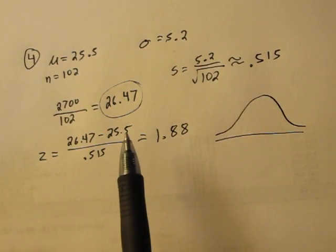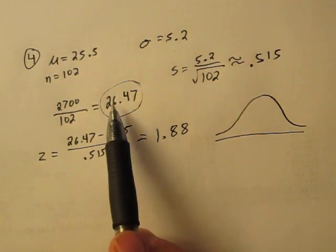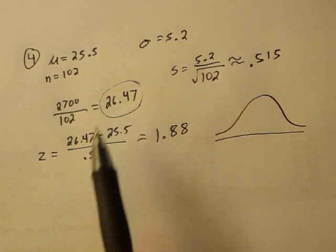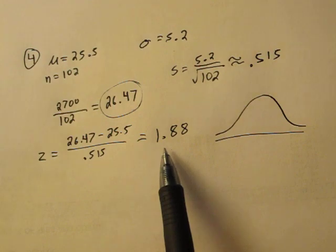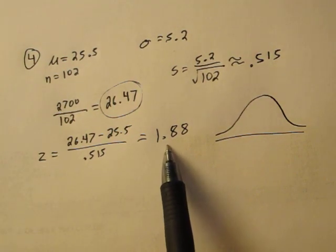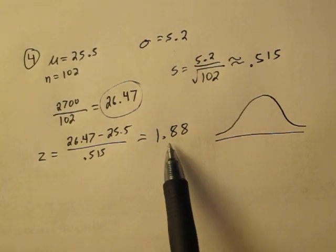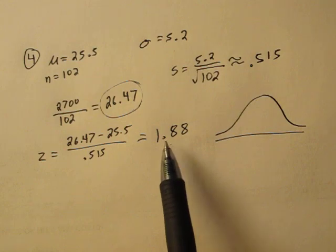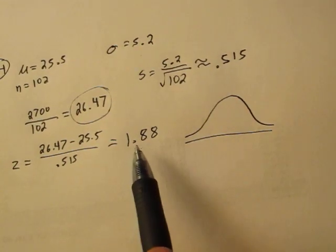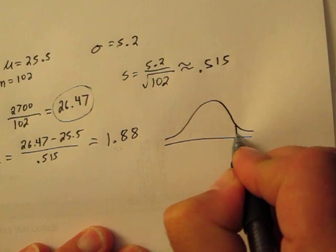We were interested in what's the probability that the mean exceeds that. We've converted that into z-scores, so we can find the probability from our table: what's the probability a z-score of a normal distribution will exceed that. 1.88 would be about here.